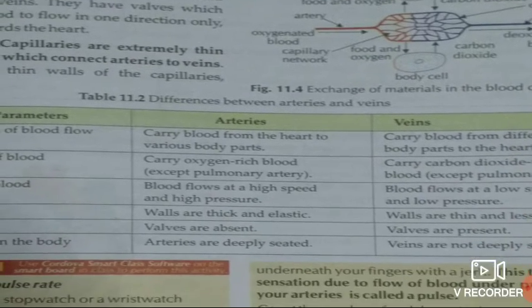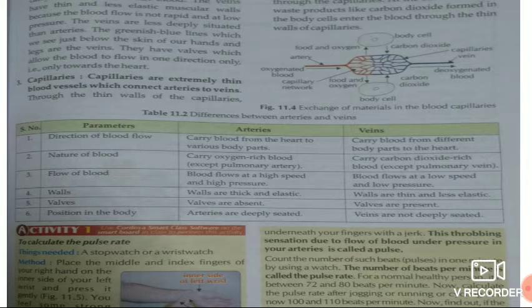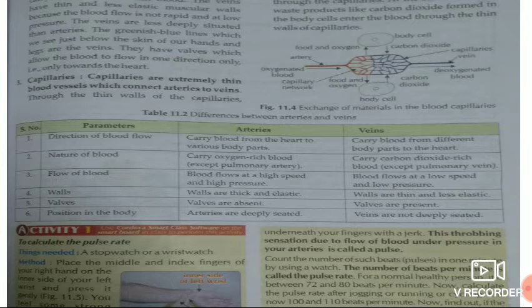Now we will read about differences between arteries and veins. A table is given with differences between these two types of blood vessels. First, the direction of blood flow: in arteries, blood goes from heart to various body parts, while in veins, blood flows from different body parts to the heart. Second, the nature of blood: in arteries, blood is oxygen-rich except in pulmonary artery; in veins, the blood is carbon dioxide-rich except in pulmonary vein.